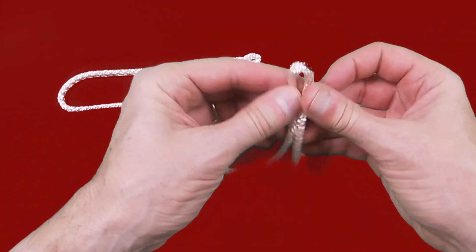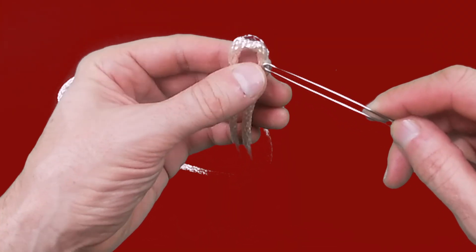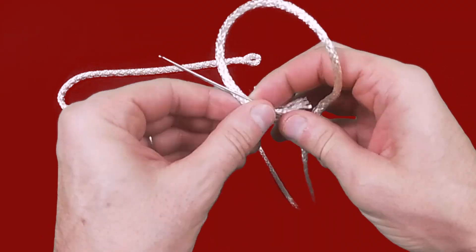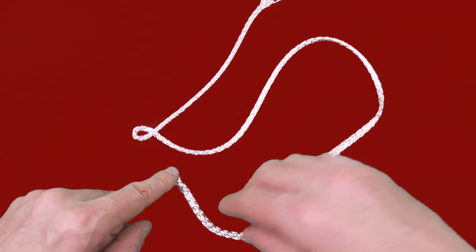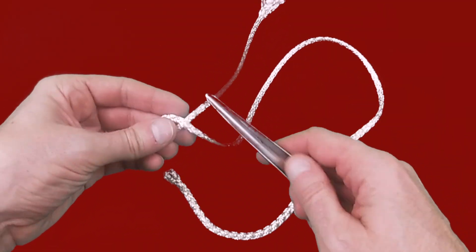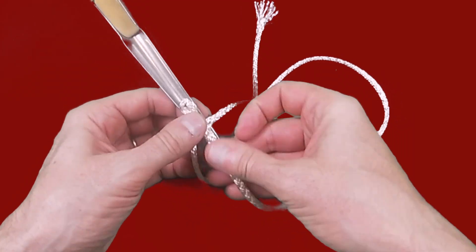The next step is to create a second Brummel splice on your other mark. We've sped up the creation of this splice, it's exactly the same as the earlier part of the video.